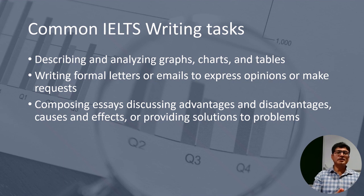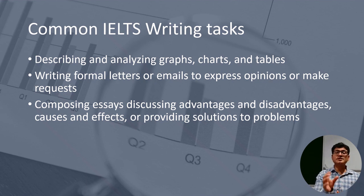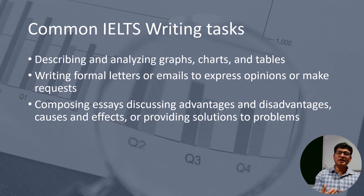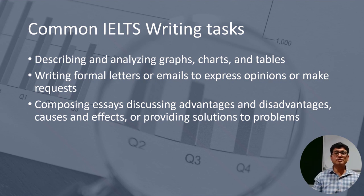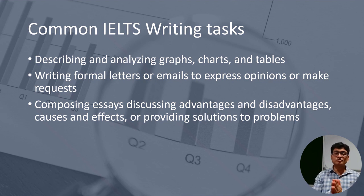Let's talk about common IELTS writing tasks. For IELTS Academic, Task 1 involves describing and analyzing graphs, charts, and tables. You'll be provided visual information — a line graph, bar graph, pie chart, map, or flow chart — and convert it into sentences, giving a summary and describing the key features of the visual. You won't write every detail because you only have 150 words, so choose wisely what to include and what to leave out.